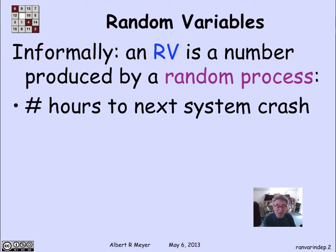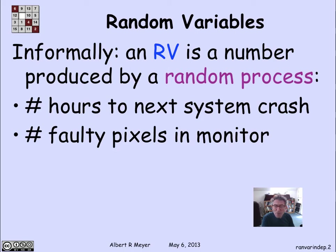A typical kind of example is you've got some system that you're watching, and you're going to time it to see when the next crash comes. Assuming that it happens in some random way, the number of hours from the present until the next time the system crashes is produced by this random process. Similarly, the number of faulty pixels in a monitor — when building monitors and delivering them to computer manufacturers — there's a certain probability that some of the millions of pixels will be faulty, and that number is produced from an unpredictable randomness in the manufacturing process.